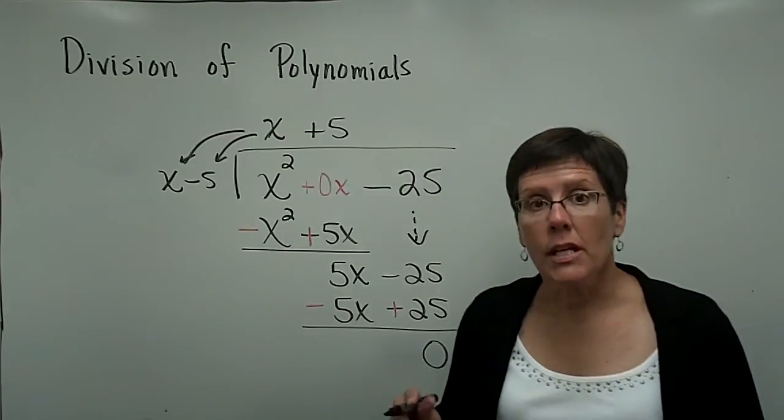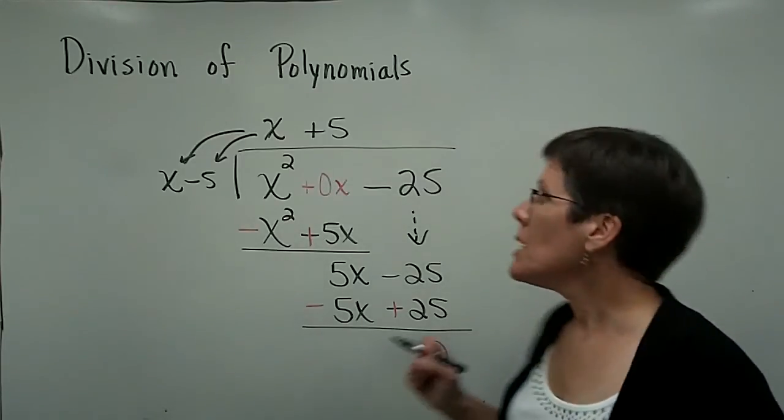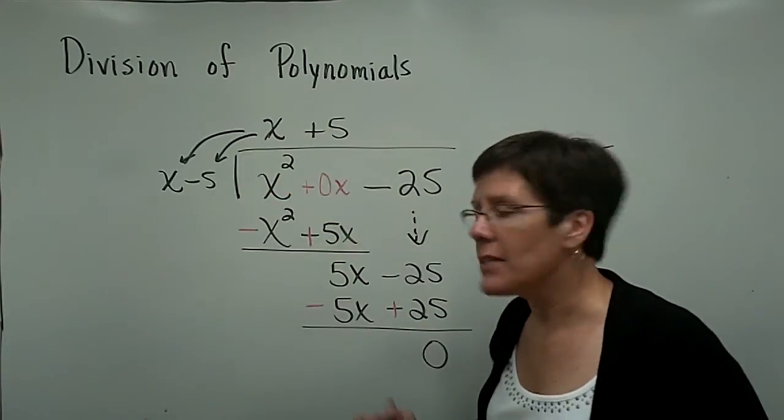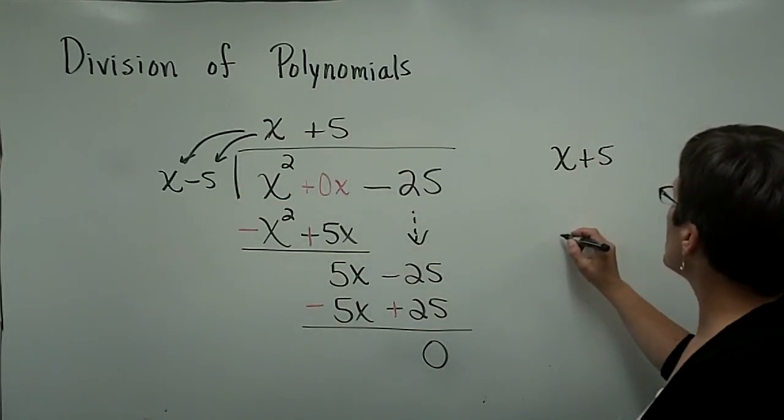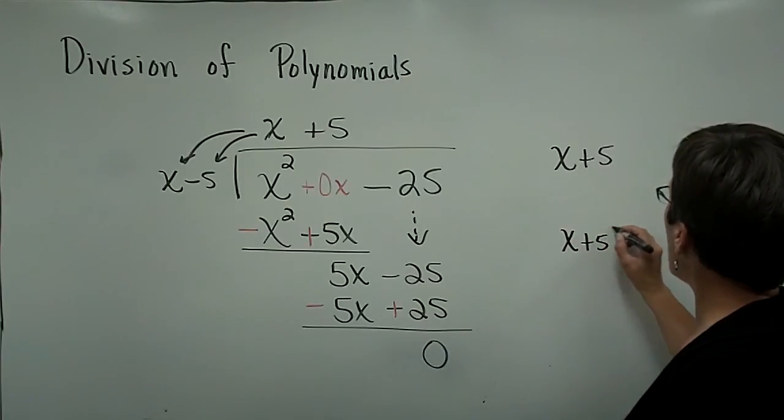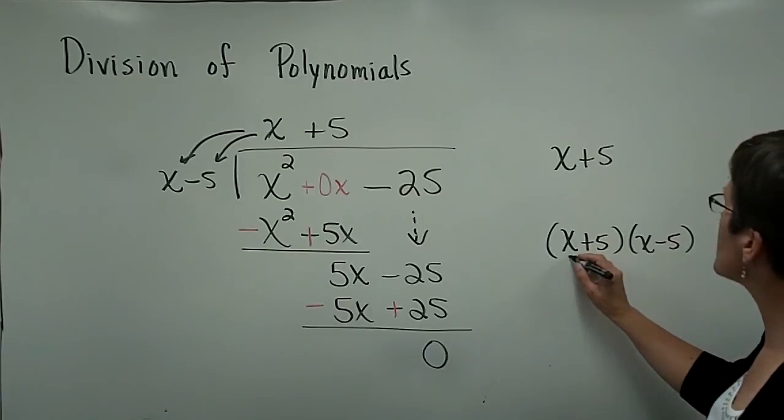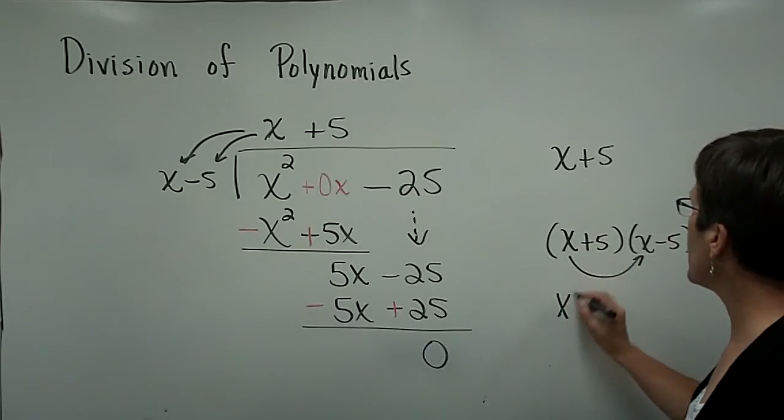The one thing you should notice is that when you do a long division problem, if you take your results and multiply it by your divisor, you should get what you started with. So my answer of x plus 5 times my divisor of x minus 5 in this particular case, when I foil that out, I get x squared.